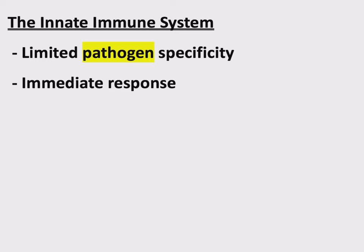The innate immune system has limited pathogen specificity. A pathogen is something trying to cause disease — the key terms define it as an agent, usually a microorganism, that causes disease in organisms that it invades. This could be a bacterium, a eukaryotic parasite, or a virus. All those things fall under the heading of pathogen. If it's trying to harm you, it's a pathogen. The innate immune system is not very specific about the pathogens that it deals with — it fights against pathogens, but not in a very specific way.